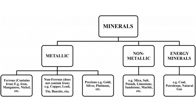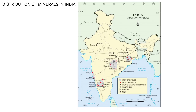Based on their composition, minerals are classified as metallic, non-metallic, and energy minerals. Metallic minerals are further divided into three types: ferrous (containing iron), non-ferrous (does not contain iron), and precious (having high economic value). Non-metallic minerals do not contain any metal. Energy minerals include fossil fuels such as coal, petroleum, and natural gas.